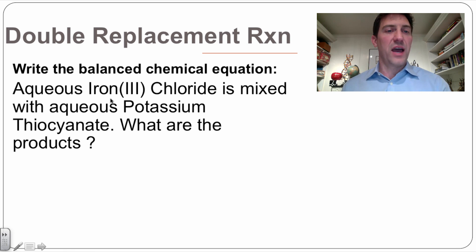Our last example here, we've got aqueous iron three chloride is mixed with aqueous potassium thiocyanate. What are the products? Well, let's find out.